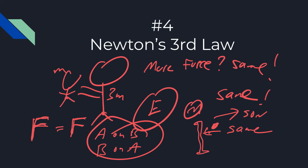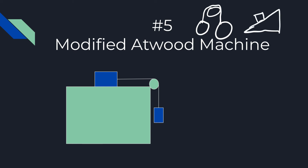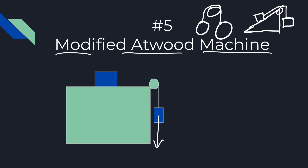Number five is Atwood machine problems — AP test writers love these. There are three common ones: the one showing now where a mass hangs off the edge of a table, one with two masses on a pulley hanging on both sides, and one with an inclined plane. You should expect at least one of these. If you're only going to learn one, it should be the one shown on screen. For the free body, you do this on each mass: gravity on the hanging mass, and tension — if it's accelerating downward, gravity will be greater than tension.